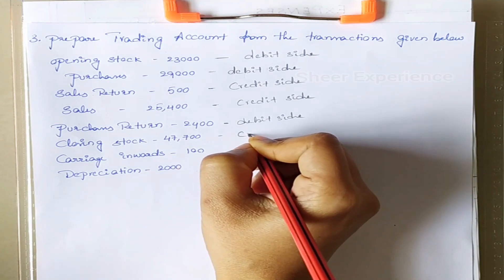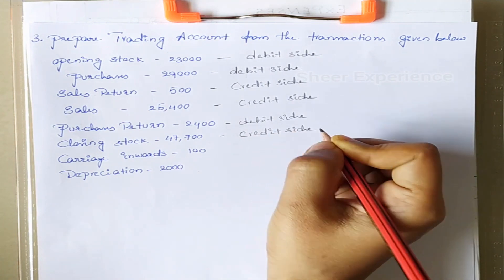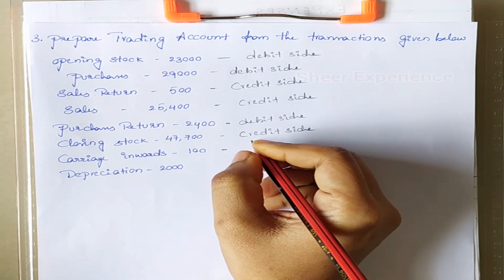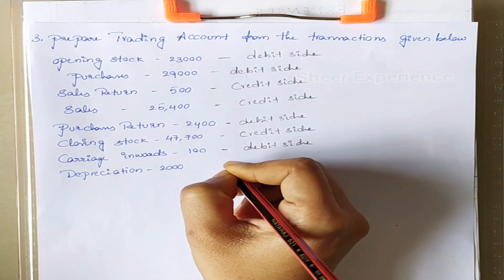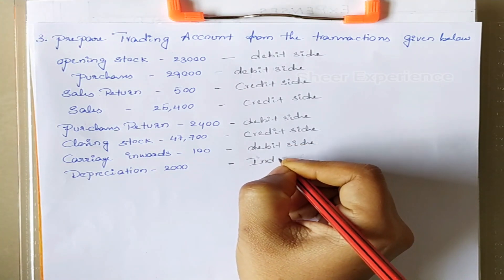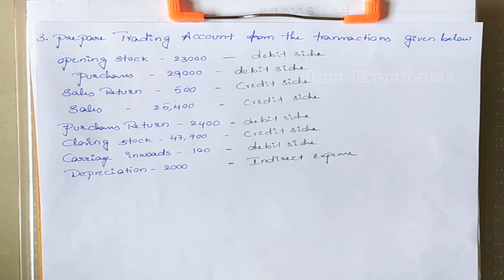Next we have closing stock, which is mentioned on the credit side. Next is carriage inwards, which is a direct expense and is mentioned on the debit side. Next we have depreciation. Depreciation is an indirect expense; we should not consider it for the trading account. This will go to the profit and loss account.